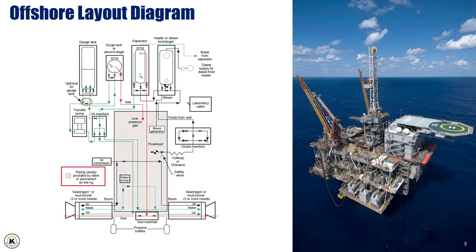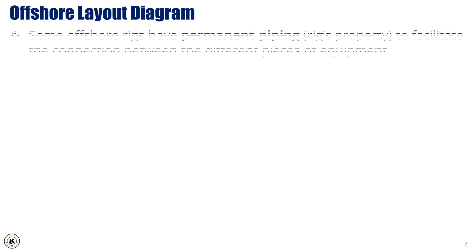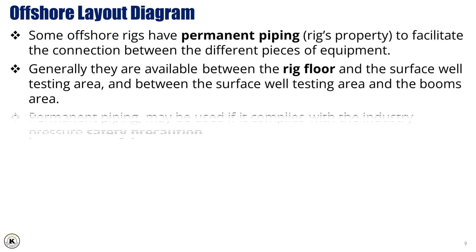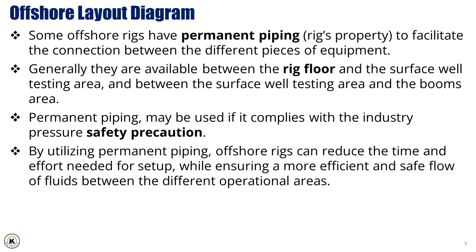Offshore Layout Diagram. Some offshore rigs are equipped with permanent piping as part of the rig's infrastructure to facilitate seamless connections between various pieces of equipment. Generally, permanent piping is available between the rig floor and the surface well-testing area, as well as between the surface well-testing area and the booms area. This permanent piping can be used if it meets the required industry pressure safety precautions. By utilizing permanent piping, offshore rigs can reduce the time and effort needed for setup, while ensuring a more efficient and safe flow of fluids between the different operational areas.